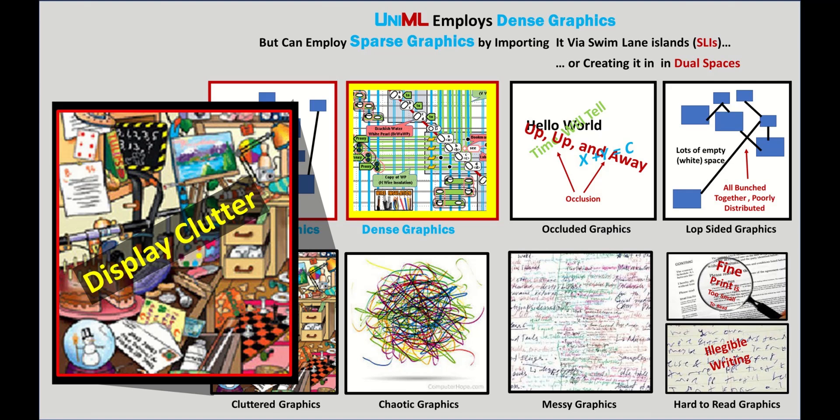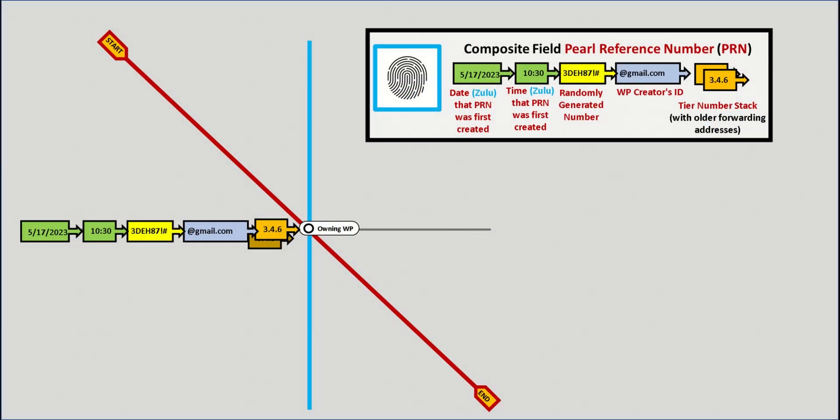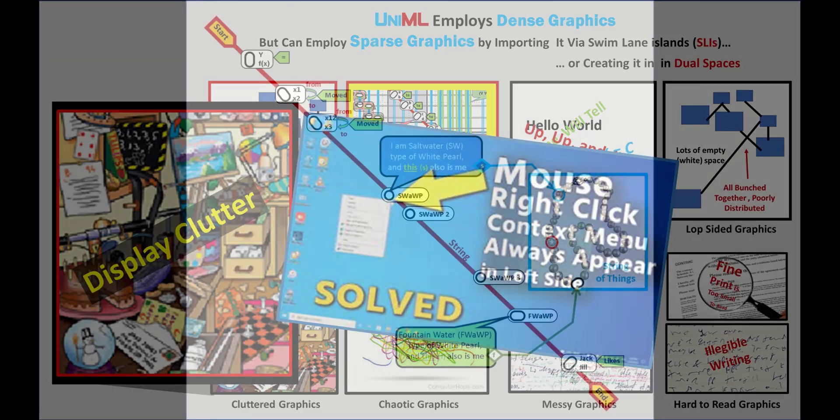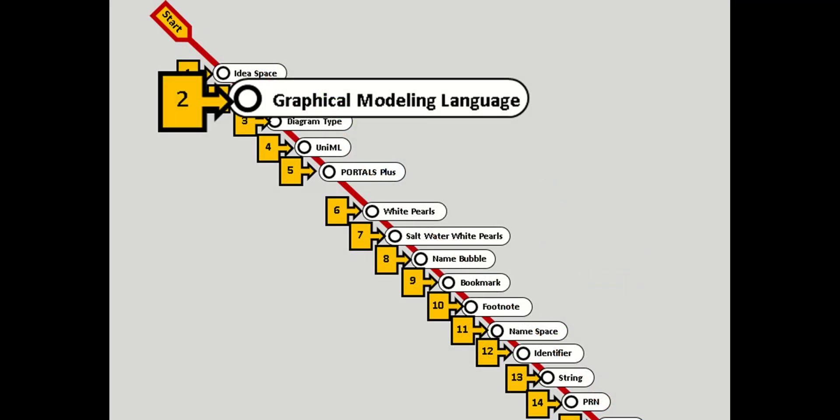But also making it easy and quick to unhide symbols as needed, typically by right-clicking on the owning symbol, which in this case would be their owning white pearl, and then selecting from a context sensitive menu, which may show the symbols as well as their names, the items to be unhidden. Also, one can apply this to not just a particular owning symbol, but to all of its type as well, such as showing the PRNs for all white pearls.